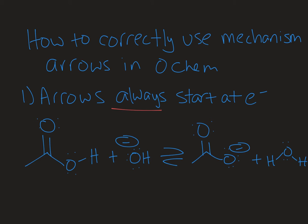So first things first, arrows always start at electrons. Okay, now I say that, I'm gonna say it again, arrows always start at electrons. Okay, so if you're writing on your exam and you look down and you see that you have arrows and it's not starting at electrons, you need to erase it.